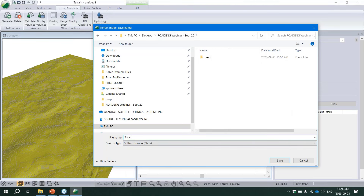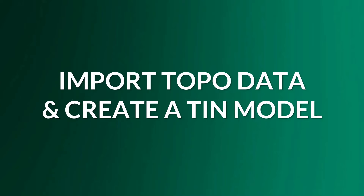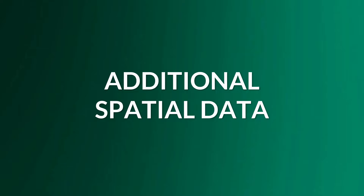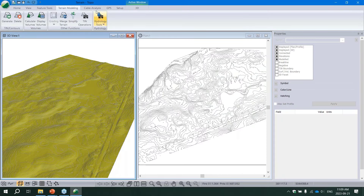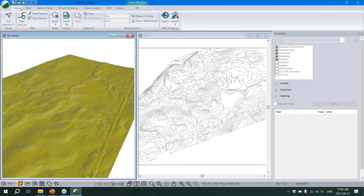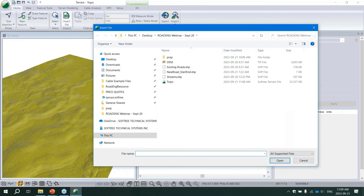Next we'll add some additional spatial data. It's often useful to add other context to your project - in forestry maybe you have block boundaries, or existing roads you'd like to see. Many types of additional spatial data can be added, and you could even combine total station or CSV data with a LiDAR dataset. Today we'll keep it simple and load in some shapefiles - likely coming from GIS - using the same Insert button we used for our DEM data.